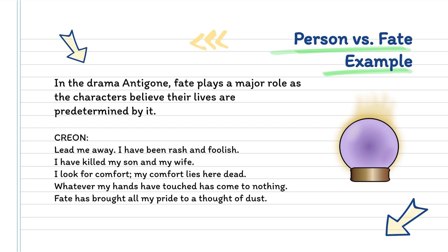Then we have person versus fate. In the drama Antigone, fate plays a major role as the characters believe their lives are predetermined. Creon says: 'Lead me away. I have been rash and foolish. I have killed my son and my wife. I look for comfort — my comfort lies here dead. Whatever my hands have touched has come to nothing. Fate has brought all my pride to a thought of dust.' Creon believes his fate was to live a life of tragedy because of his pride — pride came before a fall — and so he is now going to live a tragic fate.